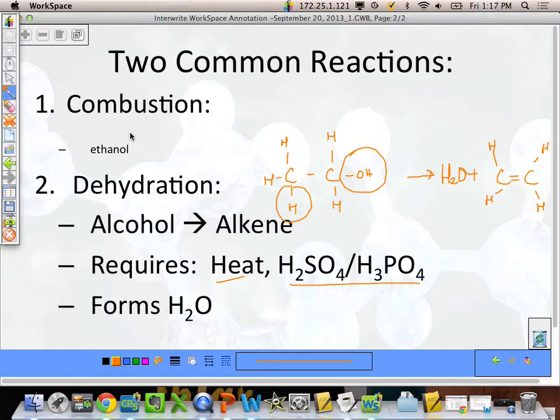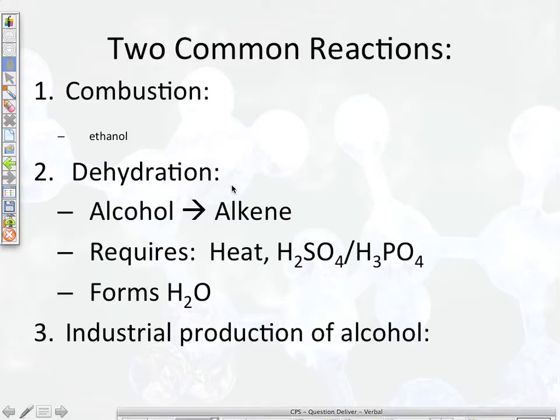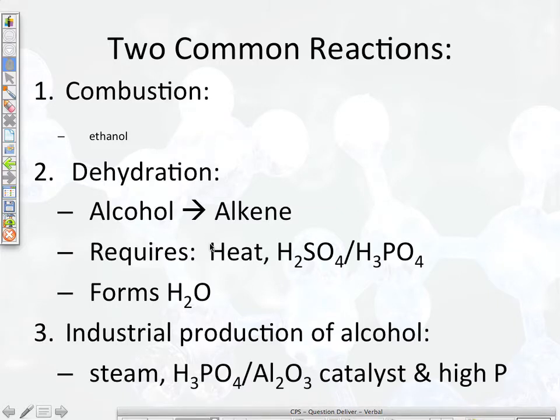Okay, in industry we can produce alcohols with steam. So really high energy particles of water. Phosphoric acid and an aluminum oxide catalyst and high pressures. So alcohol can be combusted, can be dehydrated, and we can create alcohol in this way. Anticipate that you will see questions dealing with the specifics of these. So something like, how would you produce alcohol in industry? Well, I need an aluminum oxide catalyst in the presence of phosphoric acid, steam, and high pressure. So lots of memorization with this one.